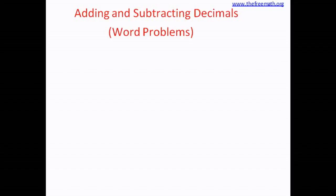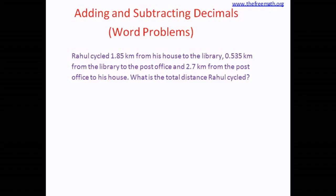The first problem is this: Rahul cycled 1.85 km from his house to the library, 0.535 km from the library to the post office, and 2.7 km from the post office to his house. What is the total distance Rahul cycled?